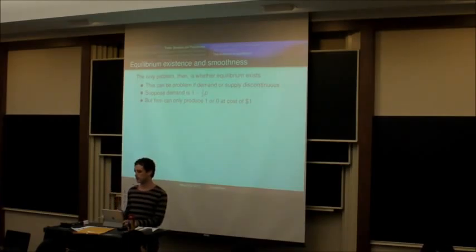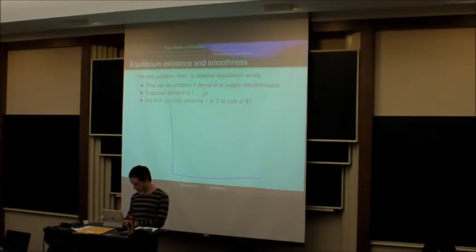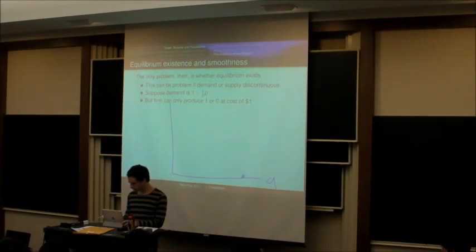But then imagine that there was a firm that could only produce either one or zero units of the good, and that the cost of producing the one unit is $1. So then if this is quantity, the consumers are willing to pay $2 for one unit.